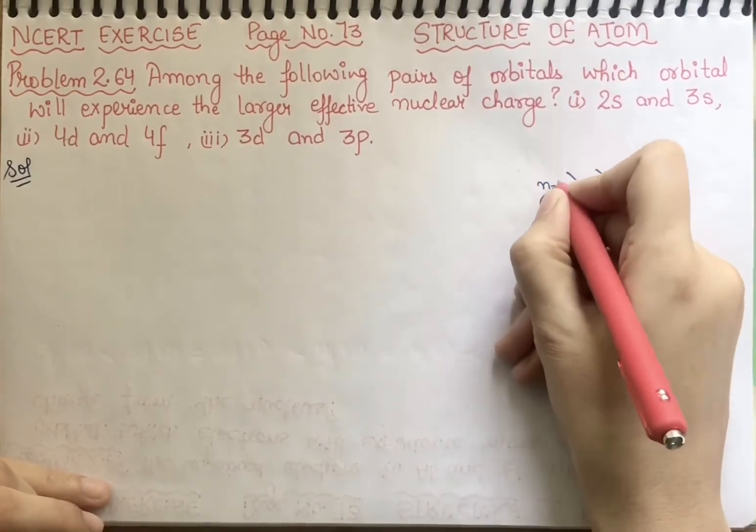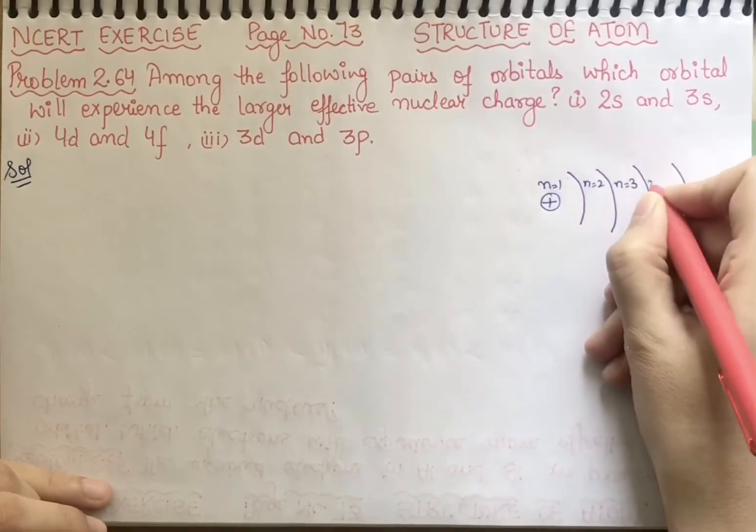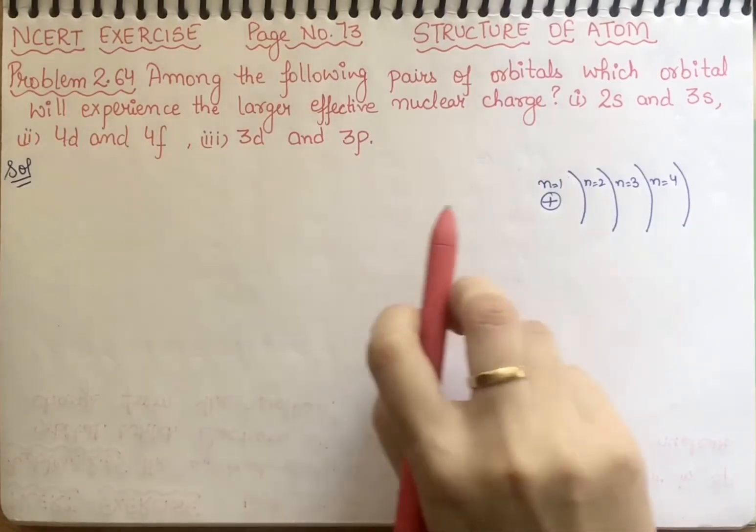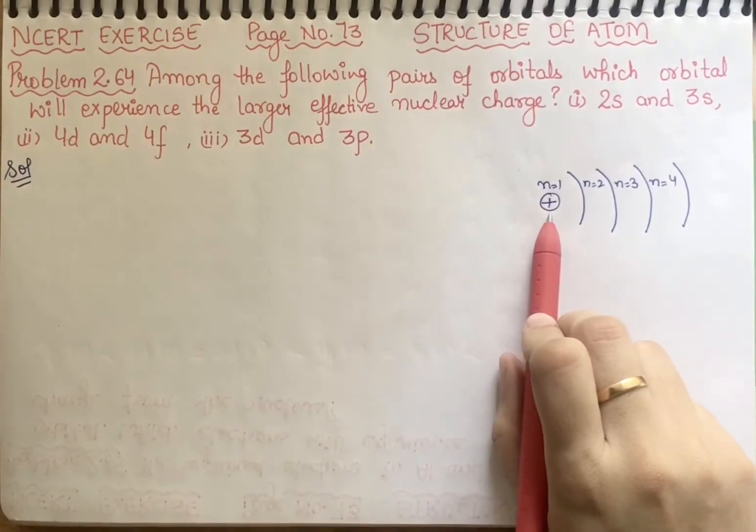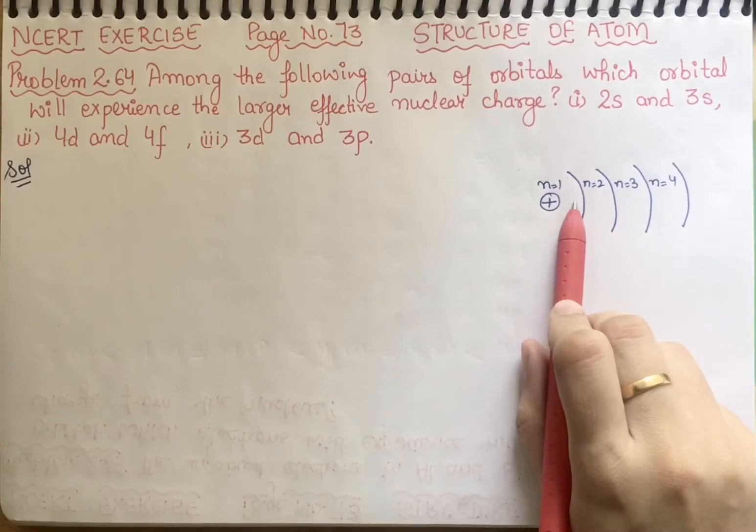N equals 1, N equals 2, N equals 3, and the last one will be 4. Now, one thing is we know that the orbit closest to the nucleus, what will happen to it? Nuclear charge will be the most effective. And the orbit that is farther, if the particles are present, nuclear charge will affect the most.